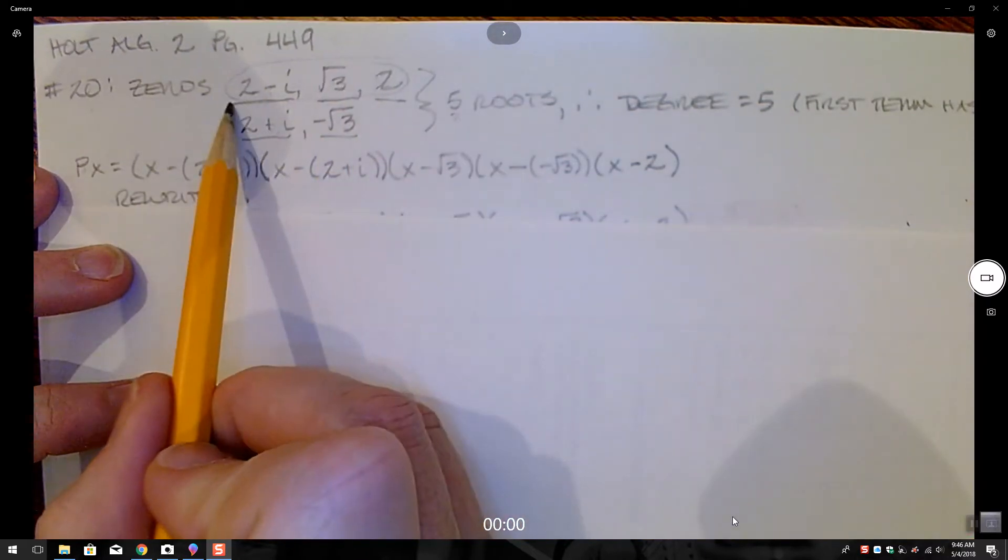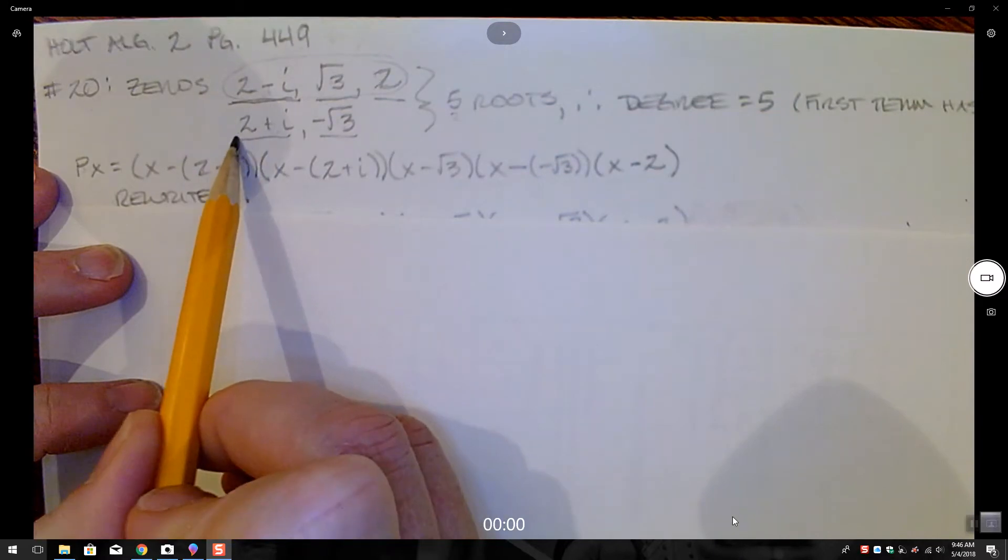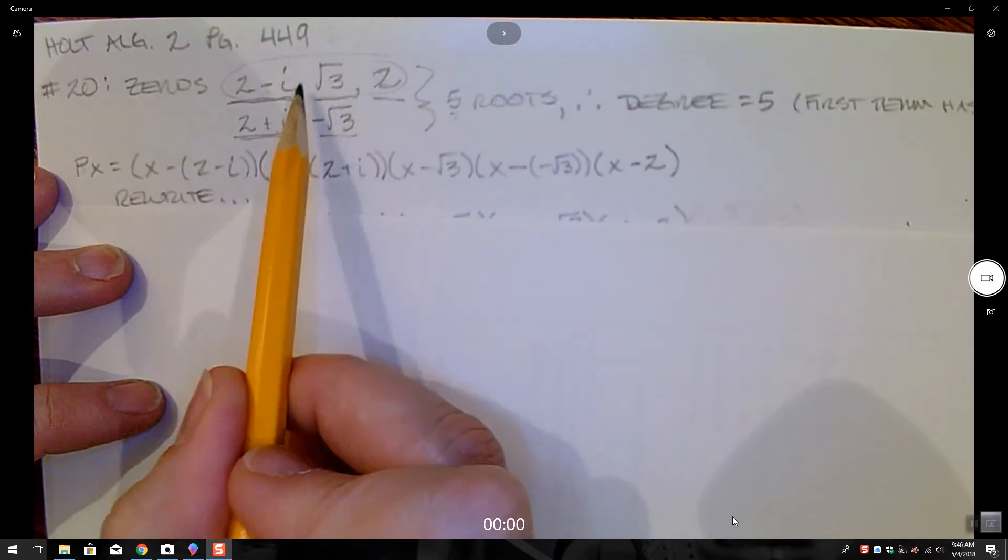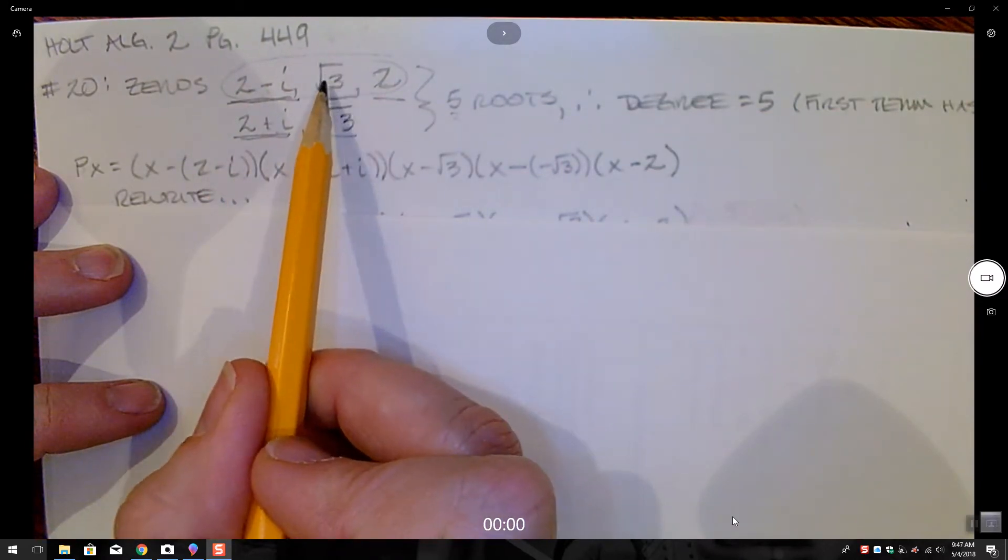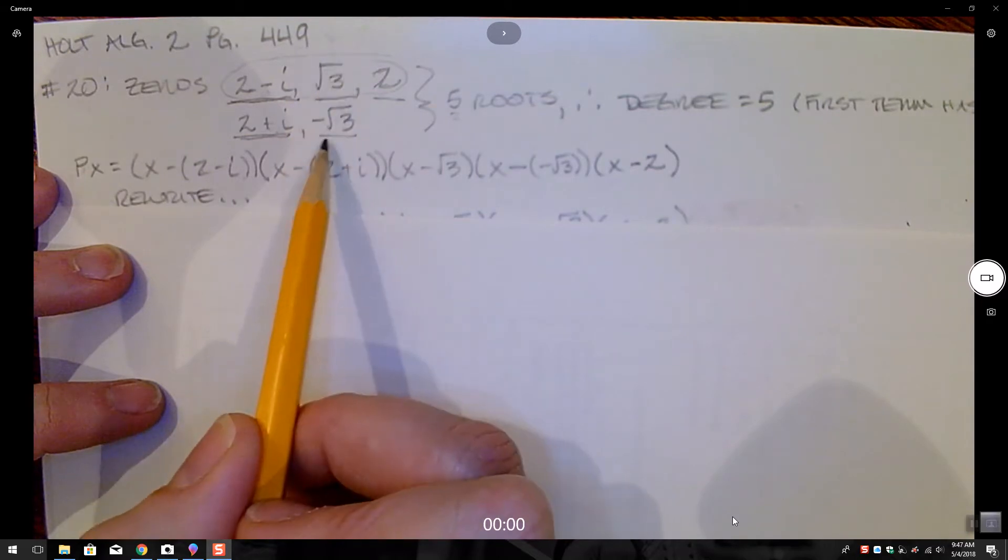We know that if we have a root 2 minus i, we also have a root 2 plus i. If we have a root 3, a root that is root 3, we also have a root that is negative root 3.